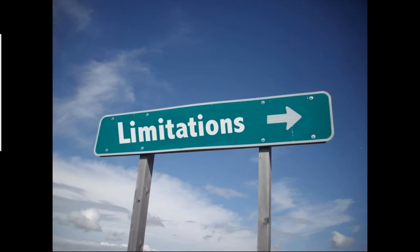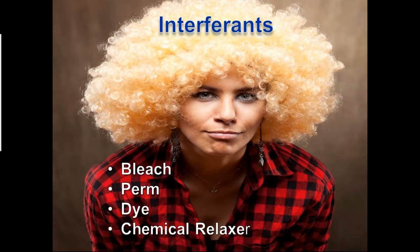Just like any other specimen type that we encounter in the laboratory, hair has limitations, and we need to appreciate those limitations when we're trying to interpret the results for our clients. First and foremost: bleaching, perming, dyeing, chemical straightening, or just cosmetic treatment. All of these processes contain varying amounts of either reducing or oxidizing agents. And depending on the drug, the hair color, the type of treatment, and extent of the treatment, it can affect the drug concentrations in the hair.